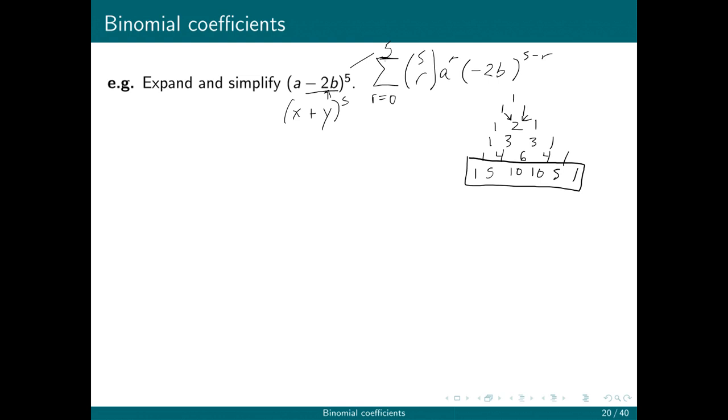And now I'm just going to write down the polynomial. It is a to the fifth power plus 5 times a to the 4 times negative 2b plus 10 times a cubed times negative 2b squared plus 10 times a squared times negative 2b cubed plus 5 times a times negative 2b to the fourth power plus negative 2b to the fifth power.